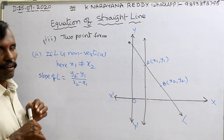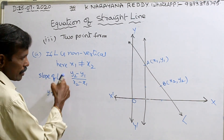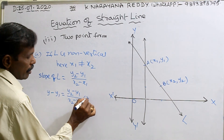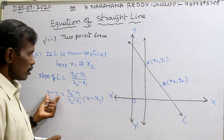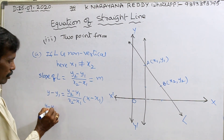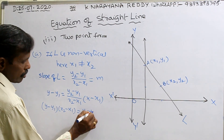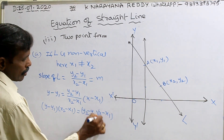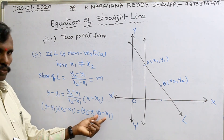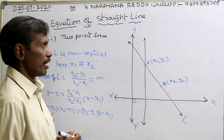What is the equation of the line containing this slope and point? y minus y1 = m into (x minus x1), where m = (y2 minus y1) divided by (x2 minus x1). By cross multiplication: (y minus y1)(x2 minus x1) = (y2 minus y1)(x minus x1). This is the required equation of the straight line where two points are given.